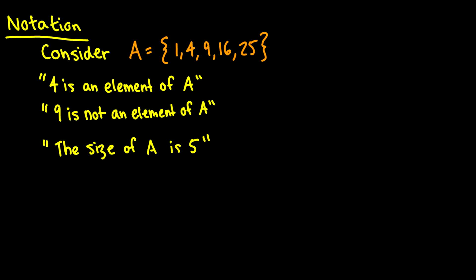We have some notation to go along with sets. Of course I've already shown you the curly brackets, and that we can list things in whatever order we want. But when we want to talk about a specific item in a set, we want to be able to say that 4 is an element of A, or 9 is not an element of A, or the size of A is something.